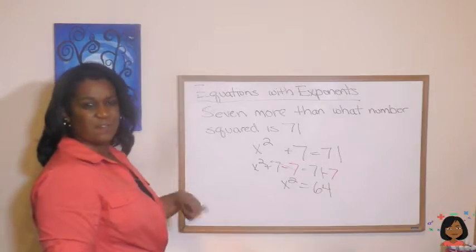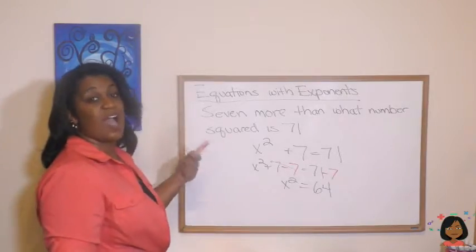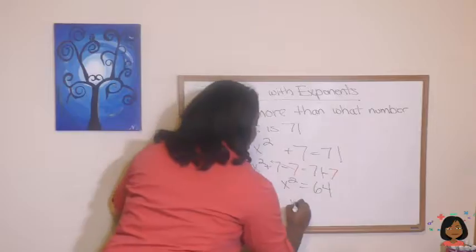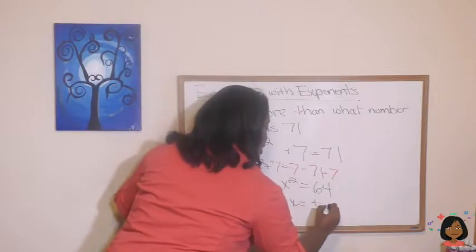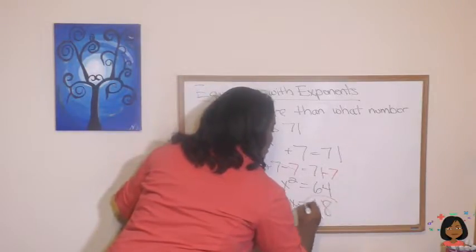x squared equals 64. What are the two square roots of 64? x equals a plus or minus 8, positive 8 and negative 8 is your answer.